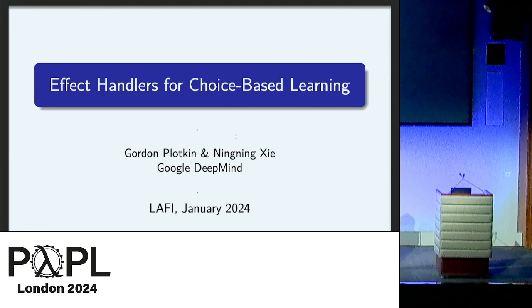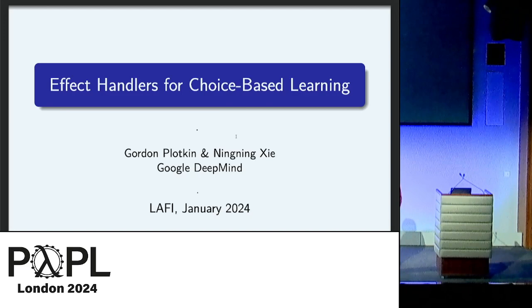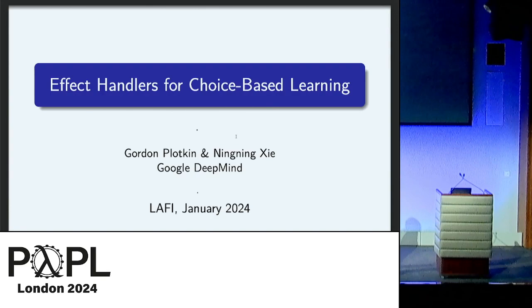Thanks. That's a very good first talk. I can't see anybody. So this is Joy Bart with Ningning, and what we're looking for is programming language primitives for making choices, where the choices are based on optimizing something.